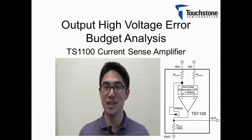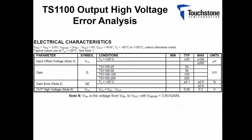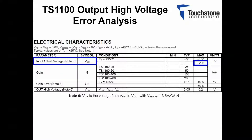Before I begin the demonstration, I will take you to the datasheet. Here is a portion of the EC table which can be found on page 3 of the datasheet. For this demonstration, I will be taking into account the max values for the given parameters. First, the input offset voltage, which over the entire temperature range will max out at 200 microvolts. For this demonstration, I have selected the TS-1100-100, which has a gain of 100.